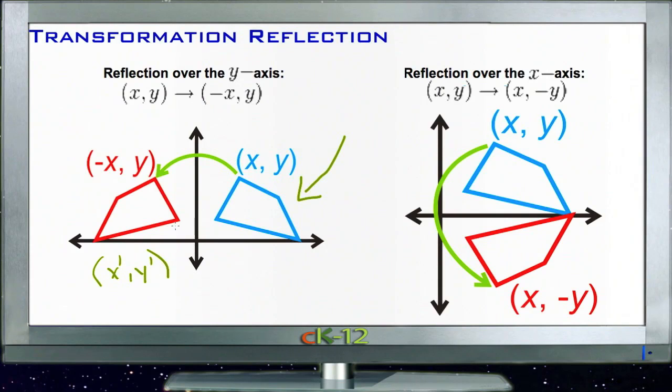Looking at the new image, we're seeing what would happen if we had a mirror reflection of our original shape. We do that by finding each point's distance from the line we're reflecting over, and then using that same distance on the other side.